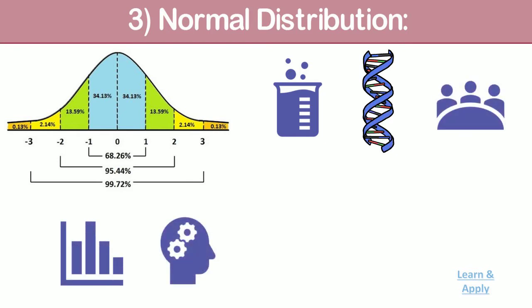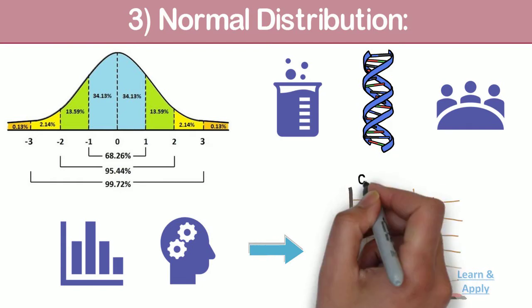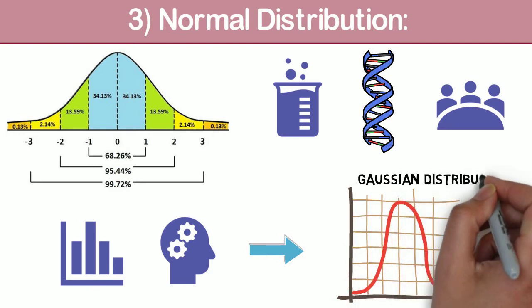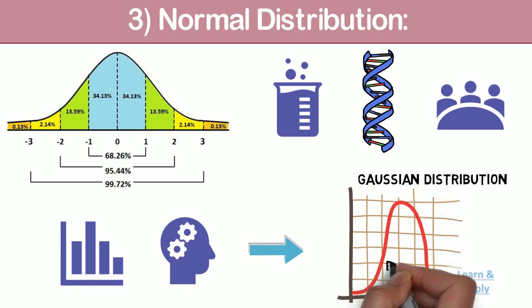Many statistical analyses require that the data came from normally distributed populations. The normal distribution, also known as Gaussian distribution, is often called a bell curve because the graph of its probability density resembles a bell shape.